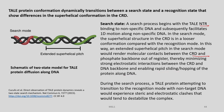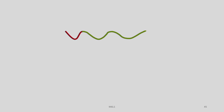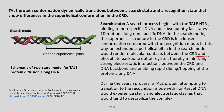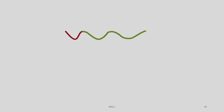During the search process, a TAL protein attempting to transition to the recognition mode with non-target DNA would experience steric and electrostatic clashes that would tend to destabilize the complex. Once it binds, it will look for its partner by sliding and even hopping. Let us have a brief discussion on the shortening of this protein which has an N-terminal region and a CRD.